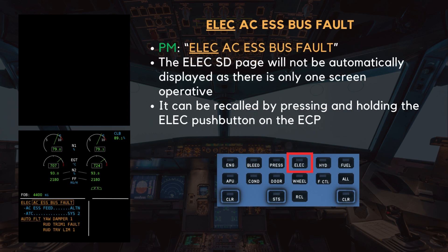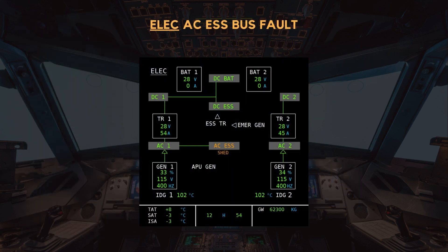The crew should confirm the failure of the AC Essential Bus Bar. The electric SD page will not be automatically displayed as there is only one screen operative. However, it can be recalled by pressing and holding the ELEC push button on the eCAM control panel. It should display the AC Essential Bus Bar in amber.